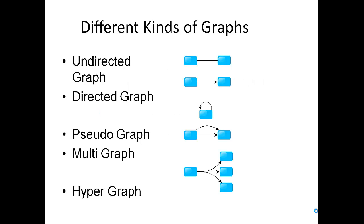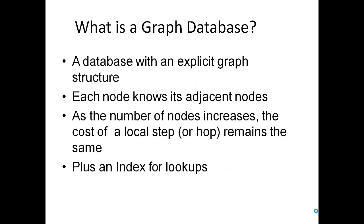There are different types of graphs like undirected graph, directed graph, pseudograph, multigraph, hypergraph. We are not going into the algorithmic bookish definition, but just directly jumping into what is a graph database.